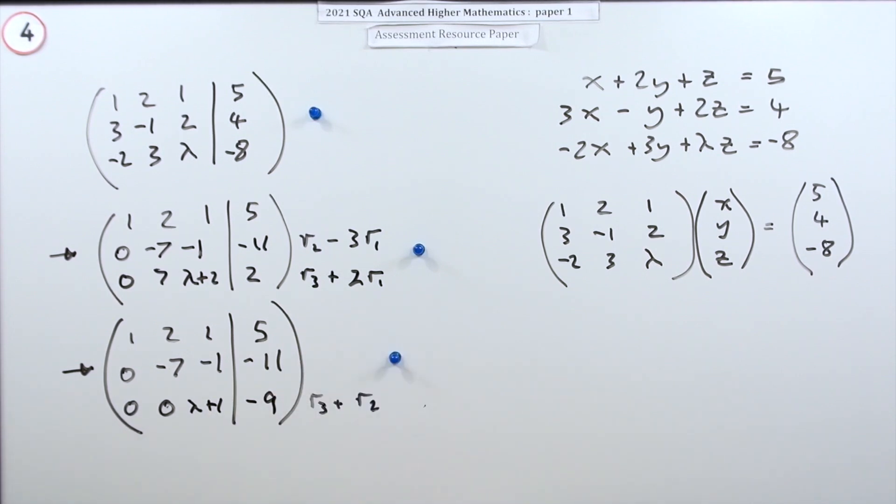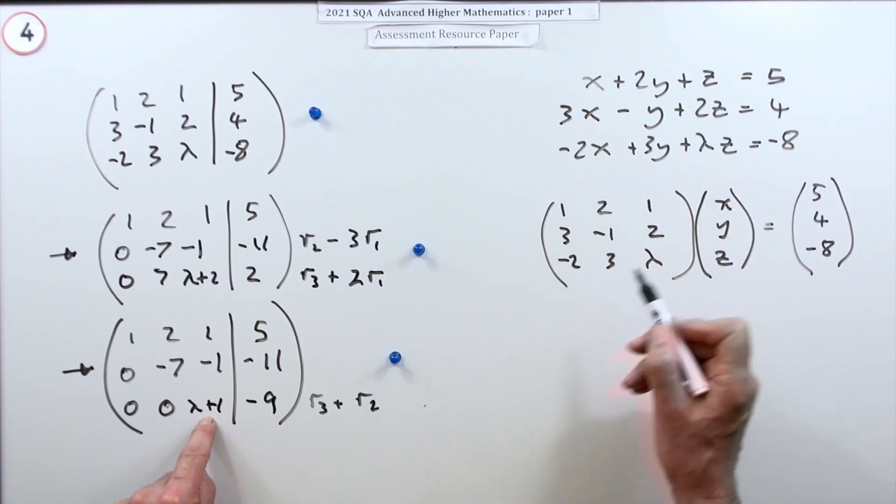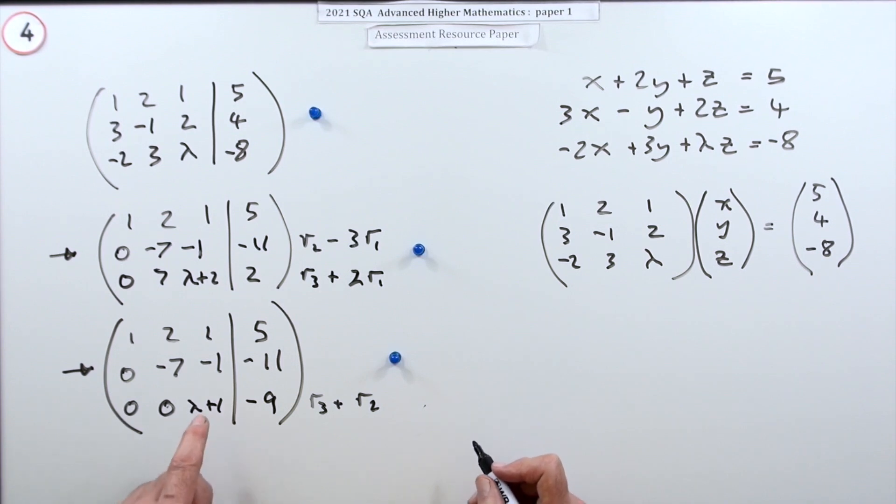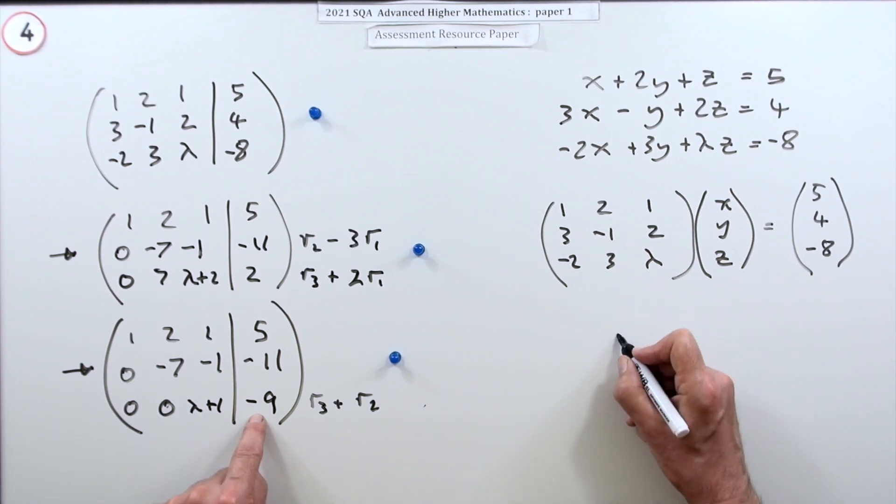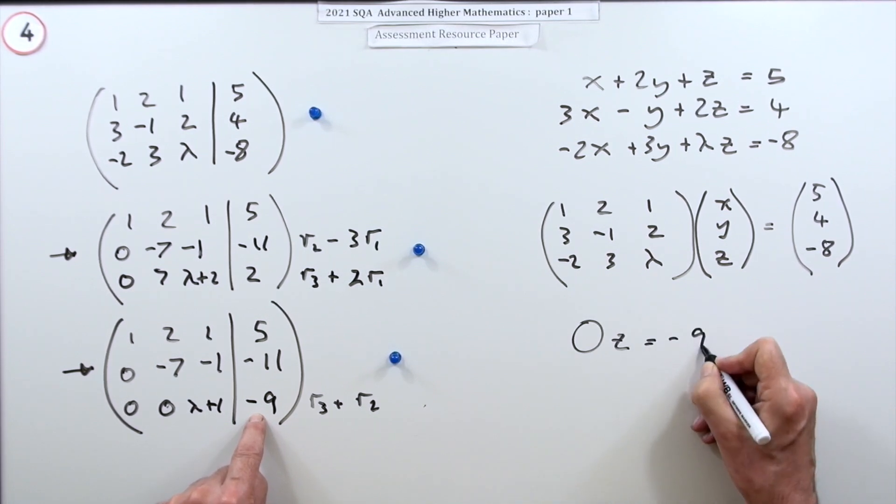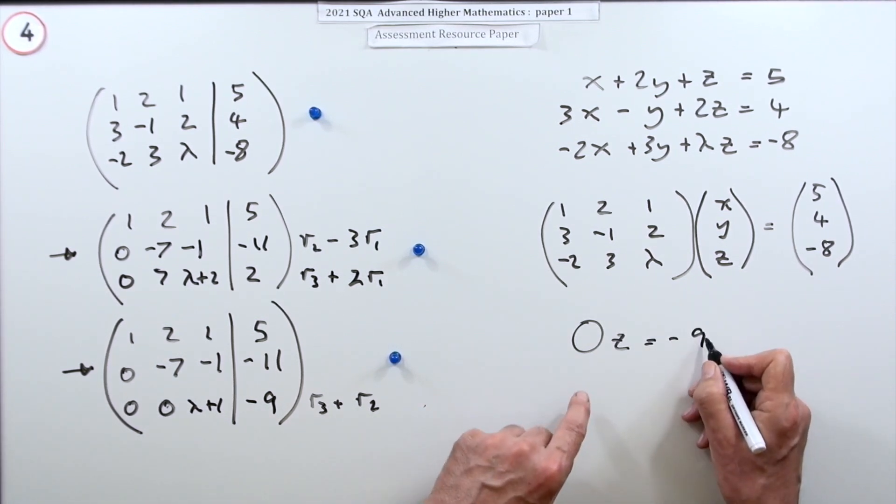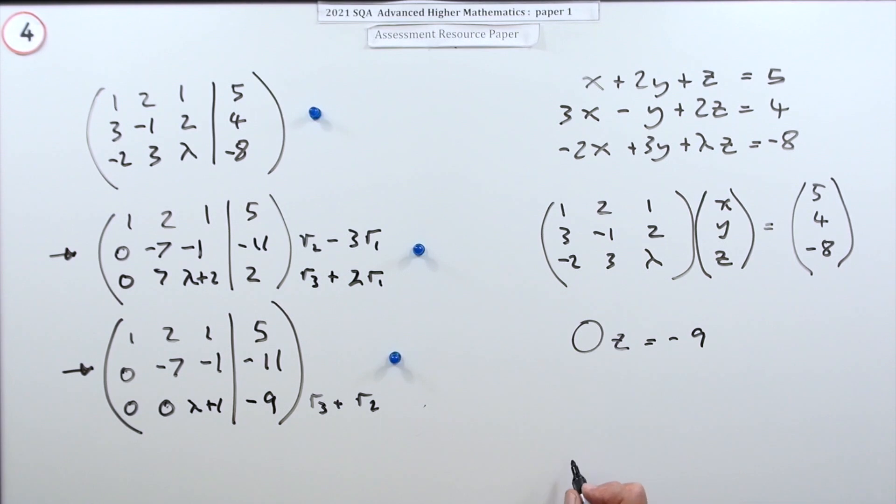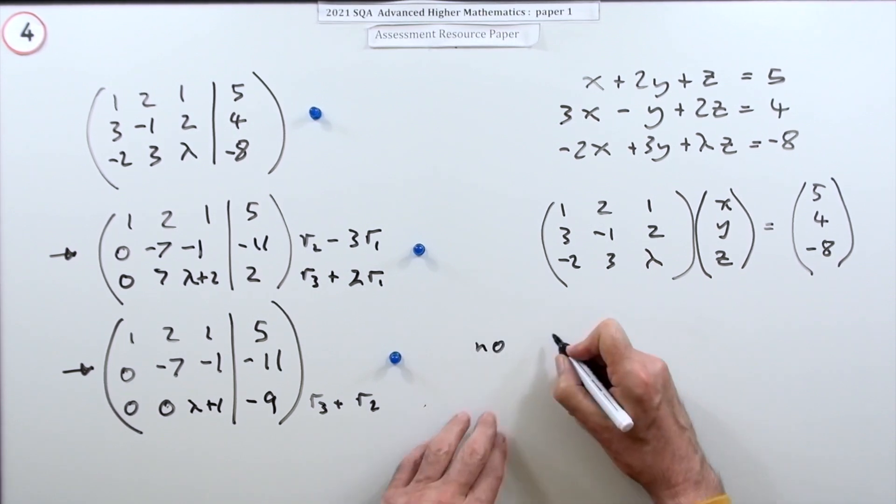Now it's just a case of, so what would be the value of lambda for there not to be a solution? Well, you could have anything you like there just about and get a solution. Because what this now says is, remember the position of the variables. This says that this number times z gives negative nine. So z will be negative nine divided by whatever that is. So it's always going to be an answer unless it's a zero.